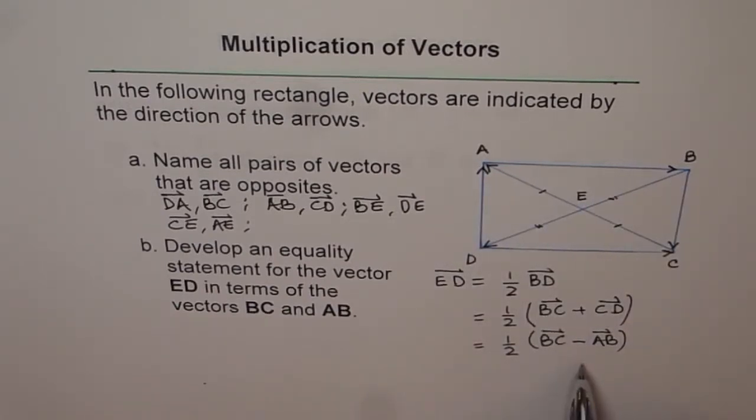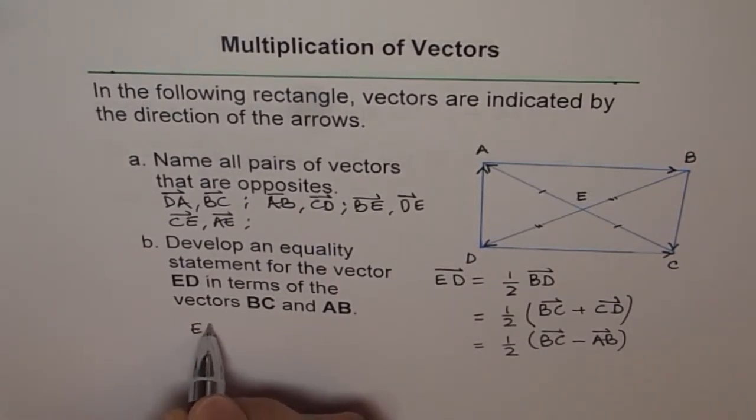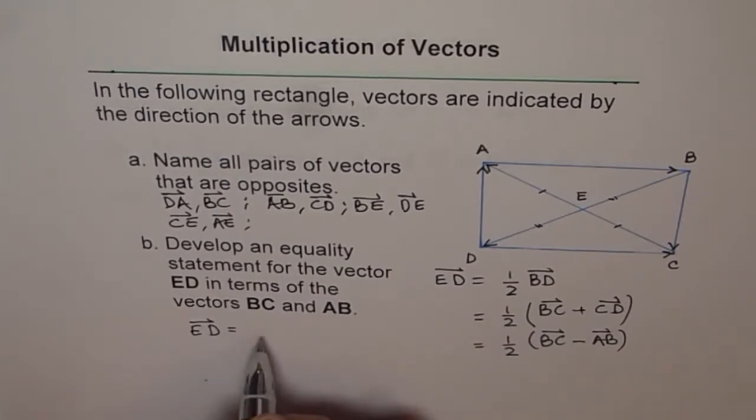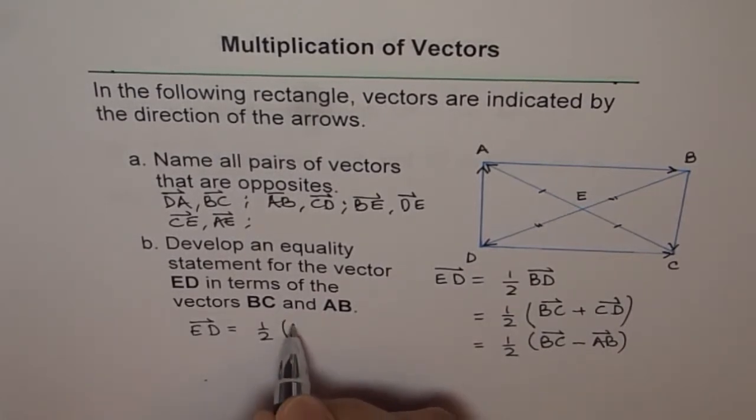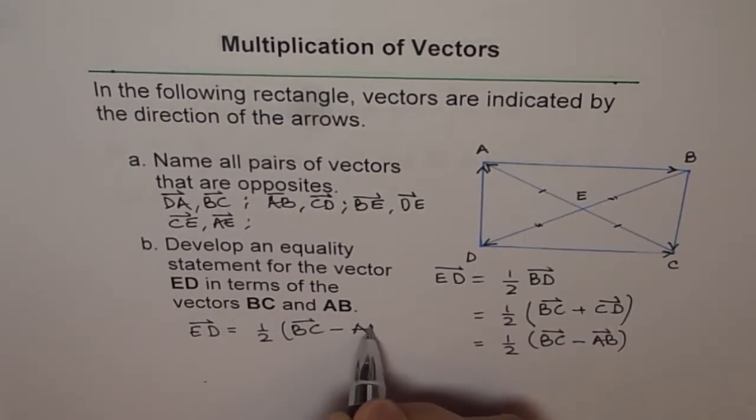So, finally, we get an equality statement. ED is equal to half of BC minus AB. So, that is our statement. So, we can write here, ED is equal to half of BC minus AB.